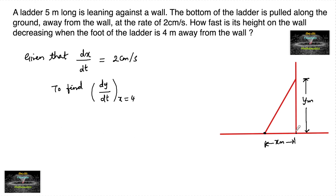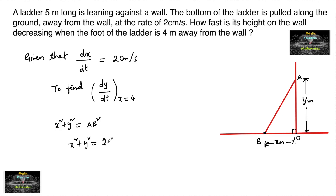Since this is a right-angle triangle, let us call it triangle OAB. We have x² + y² = AB², and AB is nothing but the ladder. The length of the ladder is given as 5 meters, so we can write x² + y² = 25, which gives y² = 25 − x², or y = √(25 − x²).